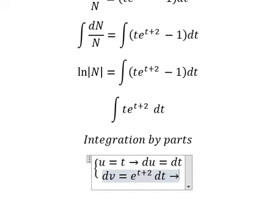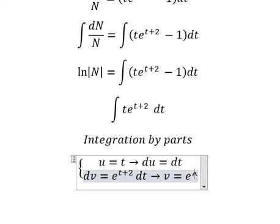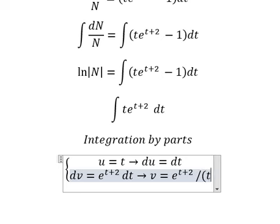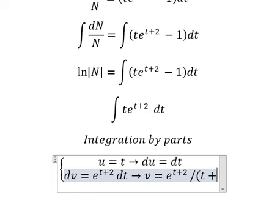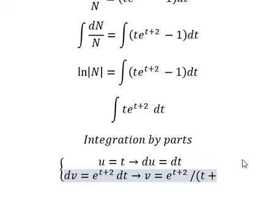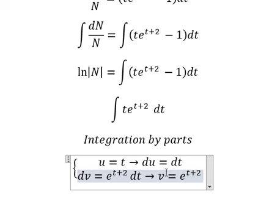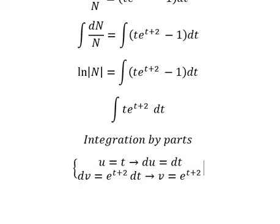The integration of this one, that is v equals to e to the power of t plus 2 over t plus 2 over t. This is number one, so you got like this now.